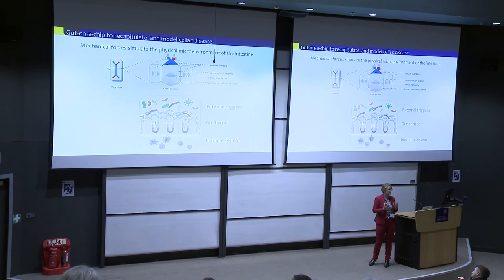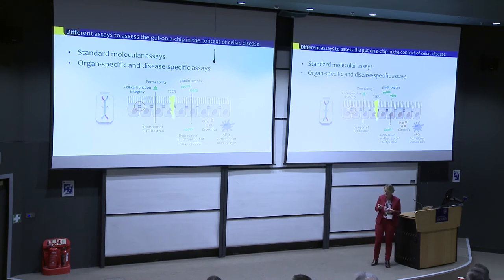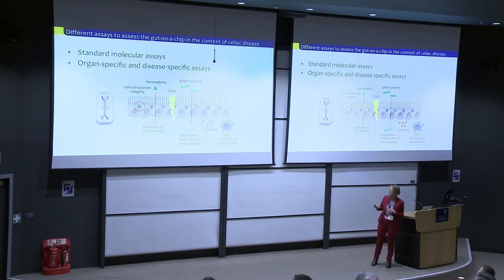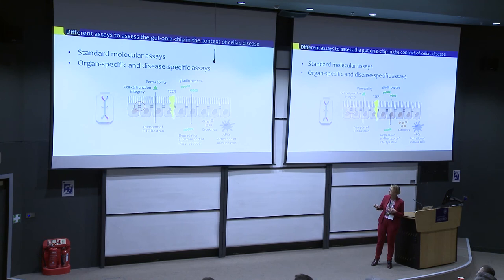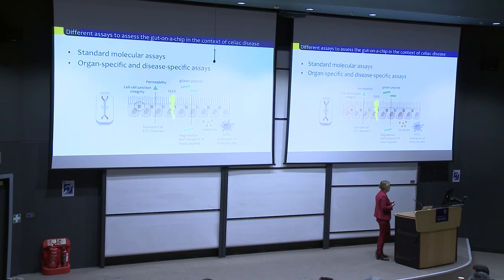This gives us a much more complex system than organoids only. We have many different readouts: standard cellular and molecular assays, plus disease-specific assays. We're very much interested in the integrity of the barrier function, so we can do TEER assays, but we can also look at the processing of gluten peptides — how they're transported, how they're degraded — particularly in the presence of different genetic backgrounds. We can also look at cytokine production and how the immune system is initiated.